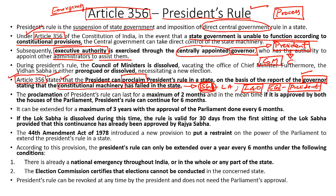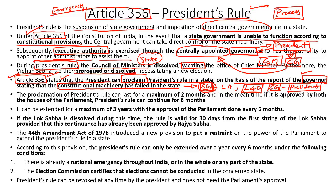Under President's rule, it is the central government which will look after the executive and administrative functions through the offices of the President and the governor. Once President's rule is imposed, the Council of Ministers in the state stands dissolved and the office of the Chief Minister stands vacated. The legislative assembly of the state is either dissolved or kept in suspended animation until fresh elections are conducted.